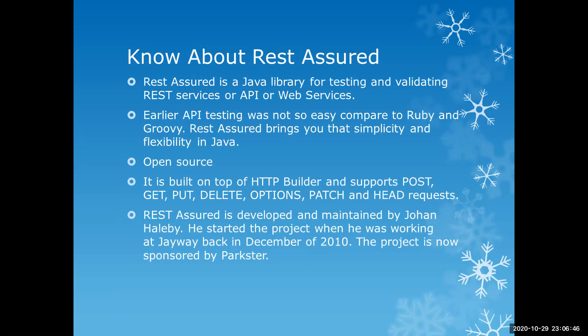As mentioned on the REST Assured website, API testing in Java was not easy compared to Ruby or Groovy languages. REST Assured brings simplicity and flexibility to Java so that you can easily test APIs in Java. It is open source, which is why it is very popular — similar to Selenium, which is also open source and used to automate UI-based web applications. It is built on a strategy builder and supports POST, GET, PUT, DELETE, OPTIONS, PATCH, and HEAD requests.